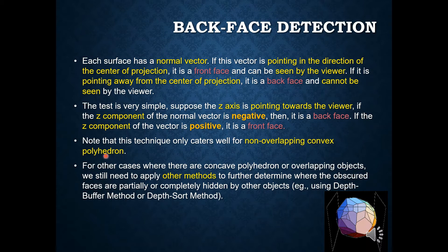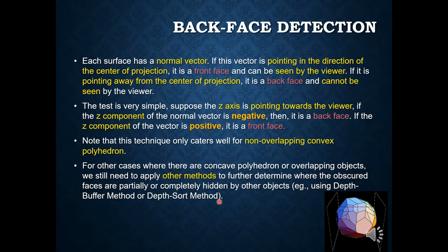This technique only works well for non-overlapping convex polyhedron surfaces. A polyhedron is a three-dimensional shape with flat polygonal faces, straight edges, and sharp corners or vertices — a solid figure with many plane faces, typically more than six. For other cases such as concave polyhedra or overlapping objects, we still need to apply other methods like depth buffer or depth sort to further determine where obstacle faces are partially or completely hidden.